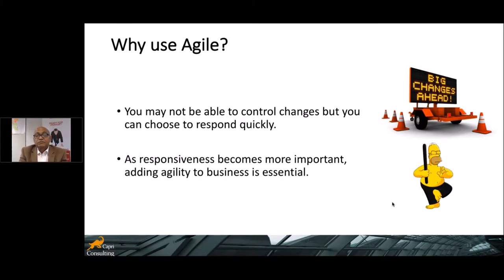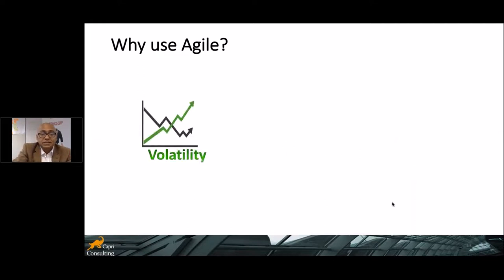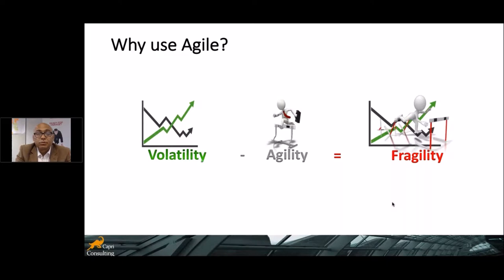As responsiveness becomes more important, adding agility to business is essential. Whether you are in manufacturing, software, or service industry, every industry needs agility to respond to changes quickly. In a very simple diagram — since the market is very volatile, if you remove agility from the current situation, all you achieve is fragility. You become so fragile that you cannot compete against your competitors.